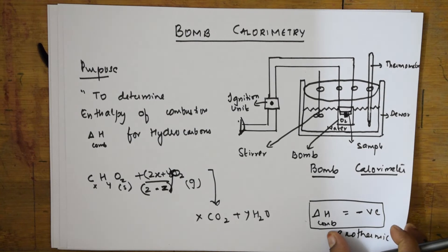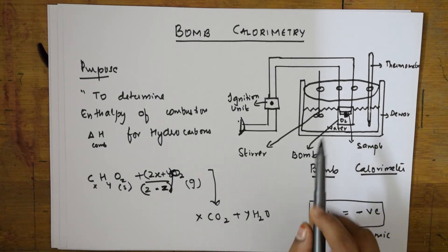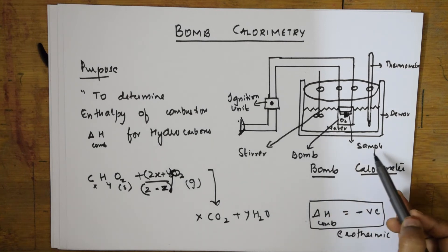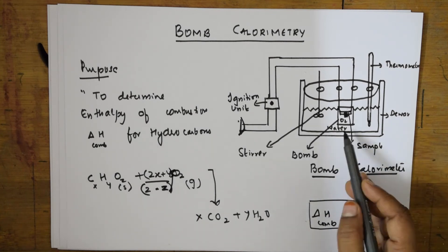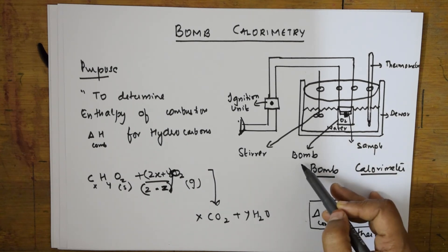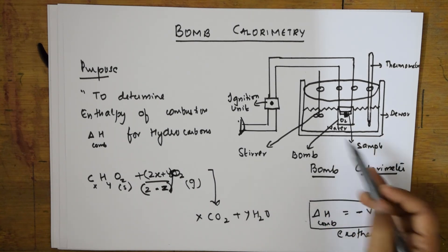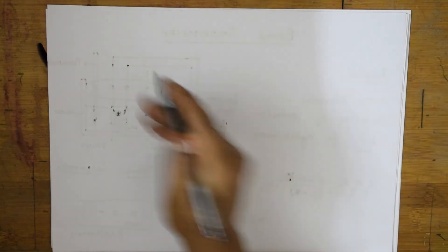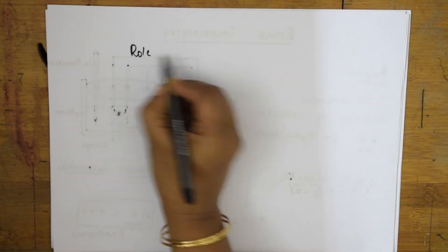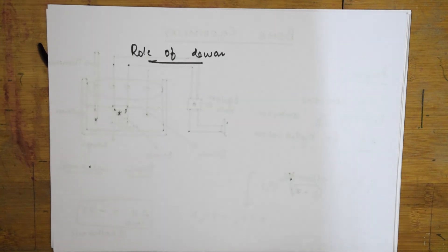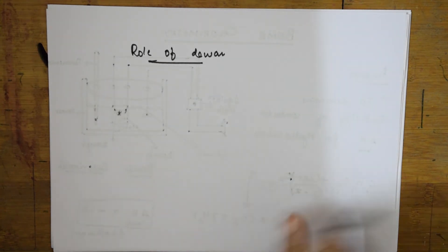Let us see the construction of the bomb calorimeter. The apparatus has: a sample, oxygen present inside, a stainless steel bomb, and water surrounding it. There is also something called a DEWAR here. What is the role of the DEWAR in the bomb calorimeter? This is asked in the exam — it is a most important component.